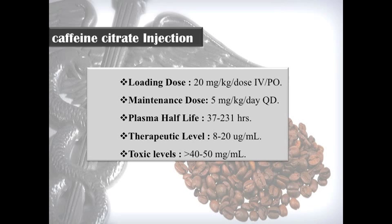The loading dose of caffeine citrate is 20 mg/kg per dose, given either IV or PO. The maintenance dose is 5 mg/kg per day, given once daily. The plasma half-life ranges from 37 to 231 hours. The therapeutic level is 8 to 29 mcg/mL, and the toxic level is above 40 to 50 mg/mL — there is a wider therapeutic range.